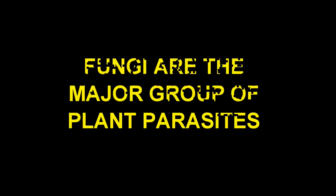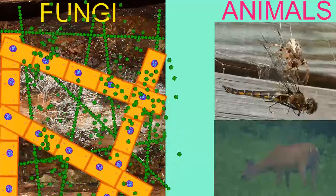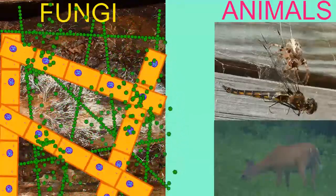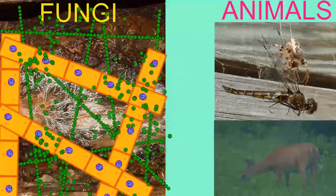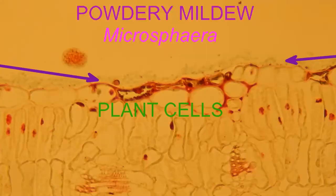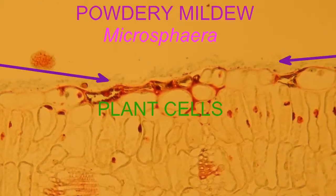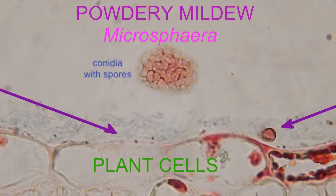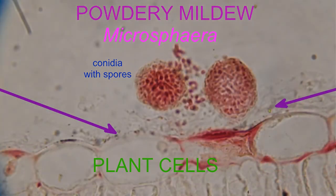While most fungi secrete their digestive enzymes into the environment and digest the macromolecules from dead organisms, such as dead plant material, many fungi are capable of digesting the macromolecules of living plant material and are thus parasitic on plants. Most plant diseases are caused by fungi.